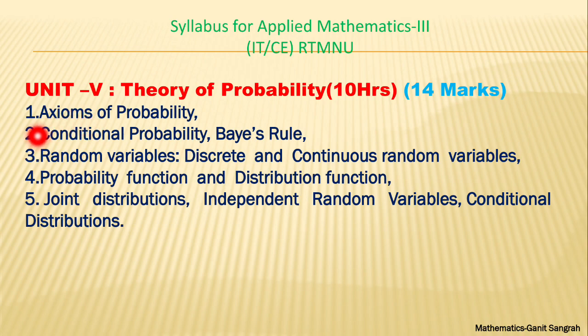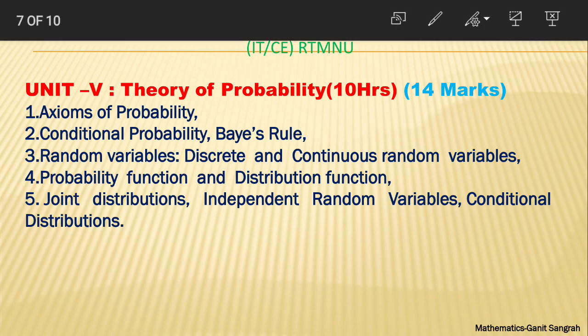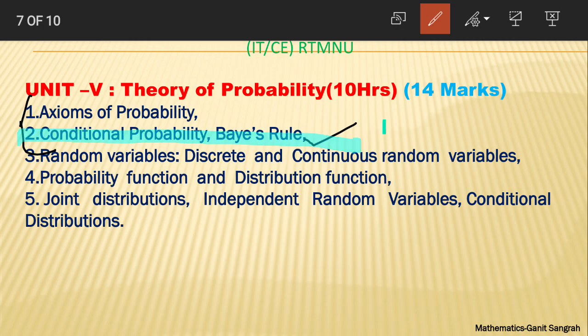In Unit 5 — Theory of Probability — we have: axioms of probability, then conditional probability, that is Bayes' rule. One bit is made on this. These first two topics cover Bayes' rule, and generally Bayes' rule equation comes in the examination for sure. So confirm this — don't leave it at all — so that you get 7 marks of a bit easily.